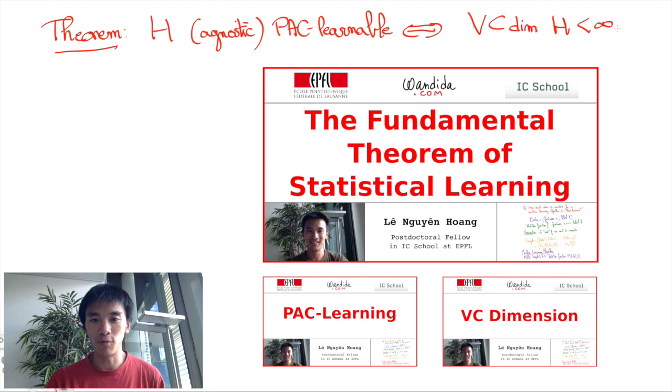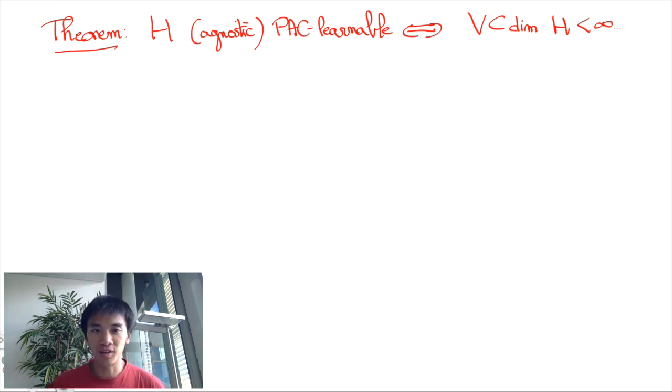If you have no idea what this means, I highly recommend the previous video I made about this theorem, which also refers to videos that give the definitions of PAC learnability and the VC dimension. I am now going to provide a very rough sketch of the proof, which I think can be interesting, as many proof techniques that appear here often come out in papers on theoretical machine learning as well.